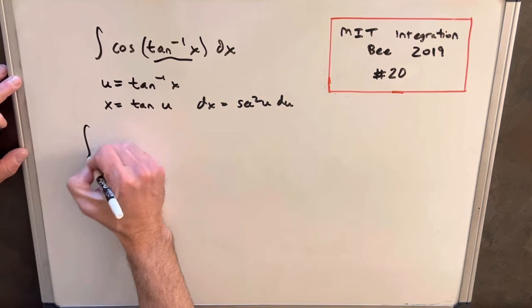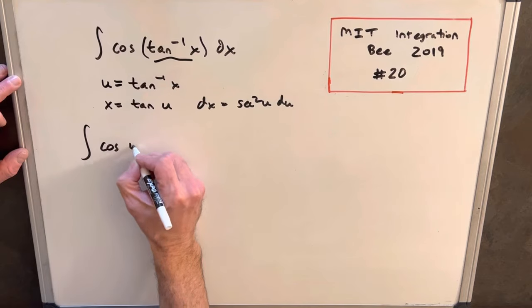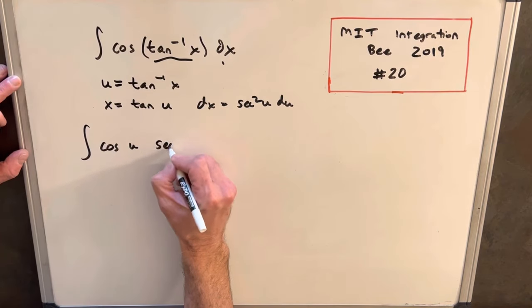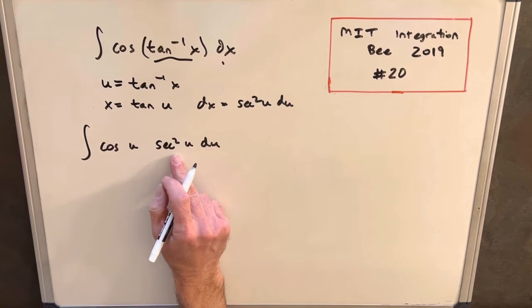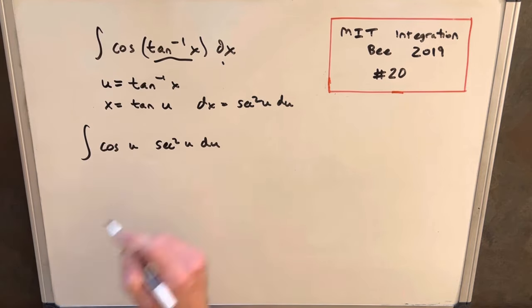Then we can make our substitution, so we have cosine of u, and then for our dx, we'll plug in secant squared u du, and that's nice because secant squared is just 1 over cosine squared.